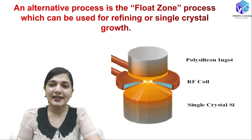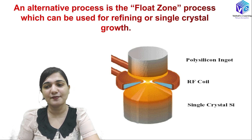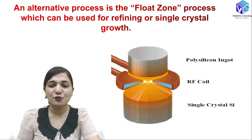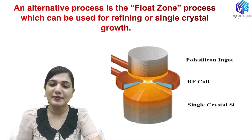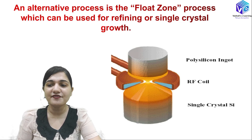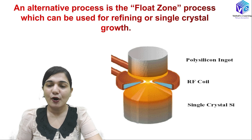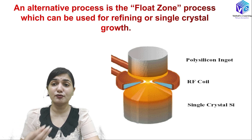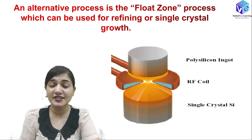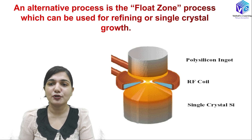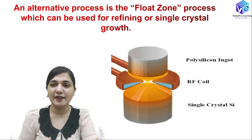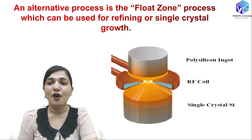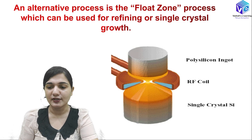The alternative process to the CZ process is the floating zone method. It can be used for refining or it can be used for manufacturing of the single crystal structure. Whenever we have to remove impurities or refine our structure, we can use the float zone method, plus it can be used for crystal growth processes as well.